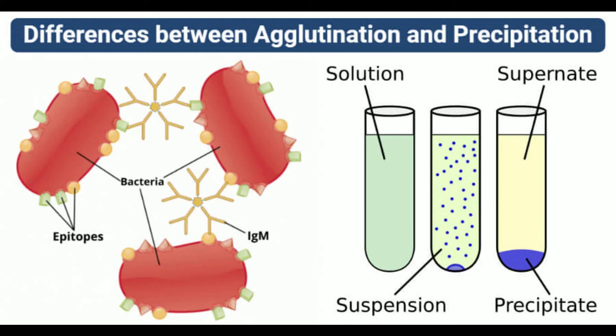Agglutination is the process of clumping of antigens with their respective antibodies. Agglutination reactions are used to test particulate antigens that are usually conjugated to a carrier.